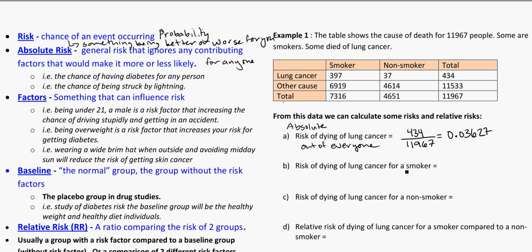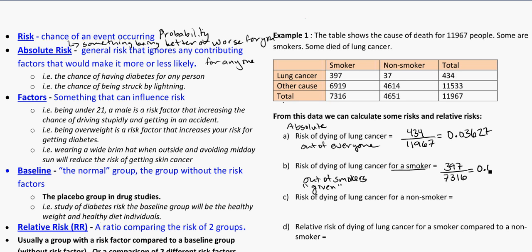When we're making a comparison for a particular factor, we move out of everybody to a specific group — in this case, for a smoker, this is out of smokers. Given that somebody is a smoker, what is the risk of them dying of lung cancer? The total number of smokers is 7,316. Out of those smokers, 397 died of lung cancer. So the risk of dying of lung cancer for a smoker is 397/7,316, which as a decimal is 0.05424.